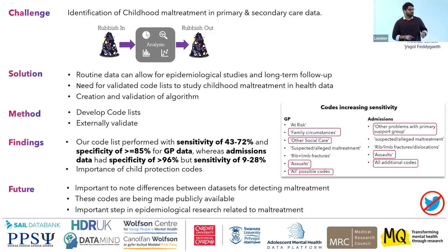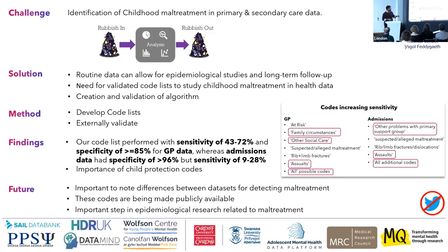When compared with GP and hospital admissions data, our GP data picked out most of the cases, while hospital admissions missed more than 80% of cases. This might be because hospital admissions don't have child protection codes, and the coding system is more focused on treating the injury rather than whether it is a result of maltreatment. While in hospital admissions data, the sensitivity was very low, but the specificity was high.